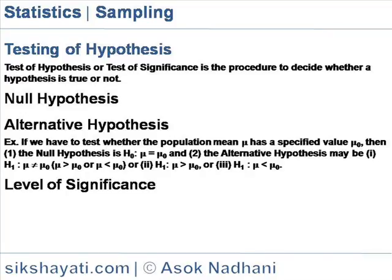Example: if we have to test whether the population mean mu has a specified value mu0, then the Null Hypothesis is H0: mu equals mu0. That means mu may be greater than mu0 or mu may be less than mu0. The alternative hypothesis H1 is mu greater than mu0, or H1 is mu less than mu0. The alternative hypothesis is called two-tailed, right-tailed, and left-tailed test respectively.